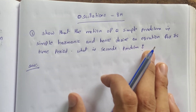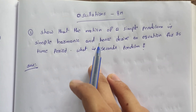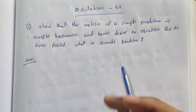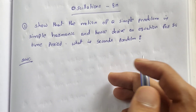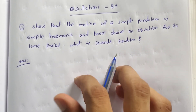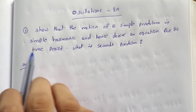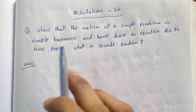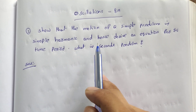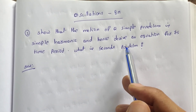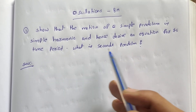Hello everyone, you are your study pen. So friends, we will take the first question in the explanation. We will skip the first question in the explanation. So let's show that the motion of a simple pendulum is simple harmonic and hence derive an equation for its time period.